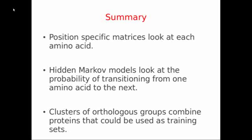So what I've told you today is that position-specific matrices look at each amino acid in alignment and use those to build a score for an unknown sequence. Hidden Markov models look at the probability of transitioning from one amino acid in the alignment to the next amino acid in the alignment, also keeping in mind that there may be insertions and deletions occurring during an alignment. And that one of the popular ways of building training sets for both PSMs and Hidden Markov models is to start with clusters of orthologous groups, proteins that are highly related to each other, and use those to build alignments.